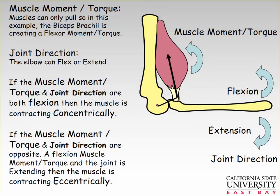When the joint flexes, the torque and the joint motion are both flexion, so the muscle is concentrically contracting. And the opposite would be an eccentric contraction: when the internal torque and the joint direction are opposite. So if you have a biceps brachii flexor torque and your elbow is going into extension, that would be an eccentric contraction.